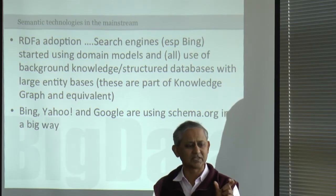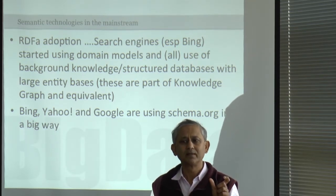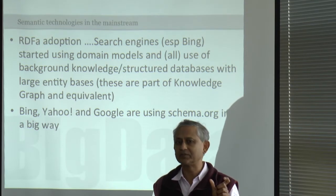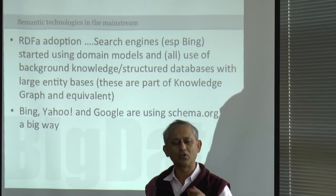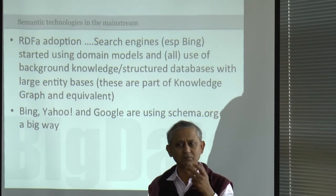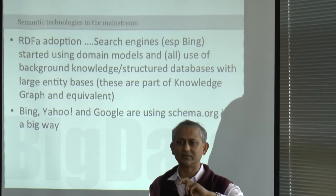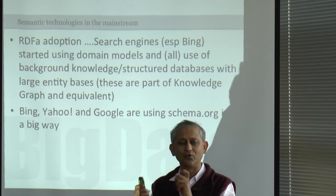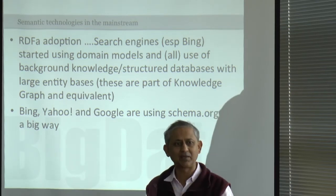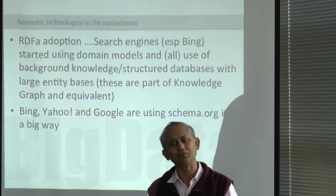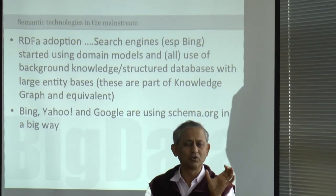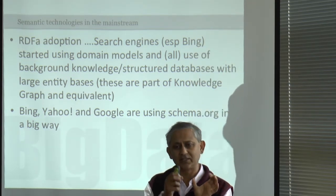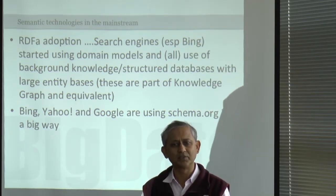For example, if a person simply says 'Springfield,' well there are 13 Springfields in the United States — which one is it? If you can figure out algorithmically to disambiguate which Springfield it is, and say it is Springfield, Ohio, that tagging becomes a lot more meaningful. Humans will only do so much, and then you will be able to provide the rest.